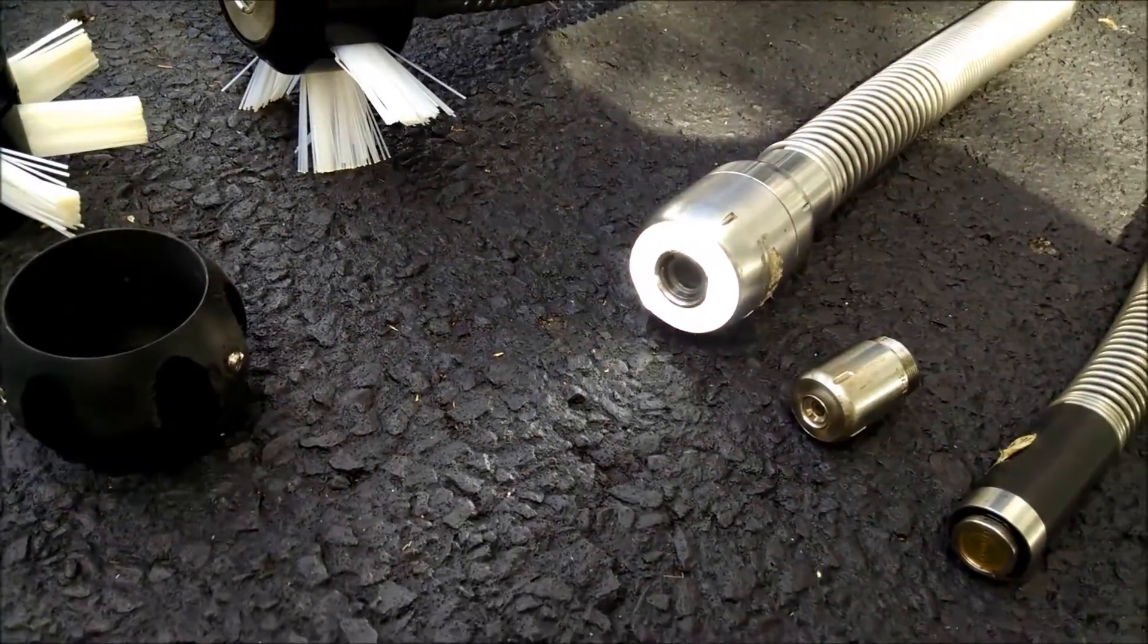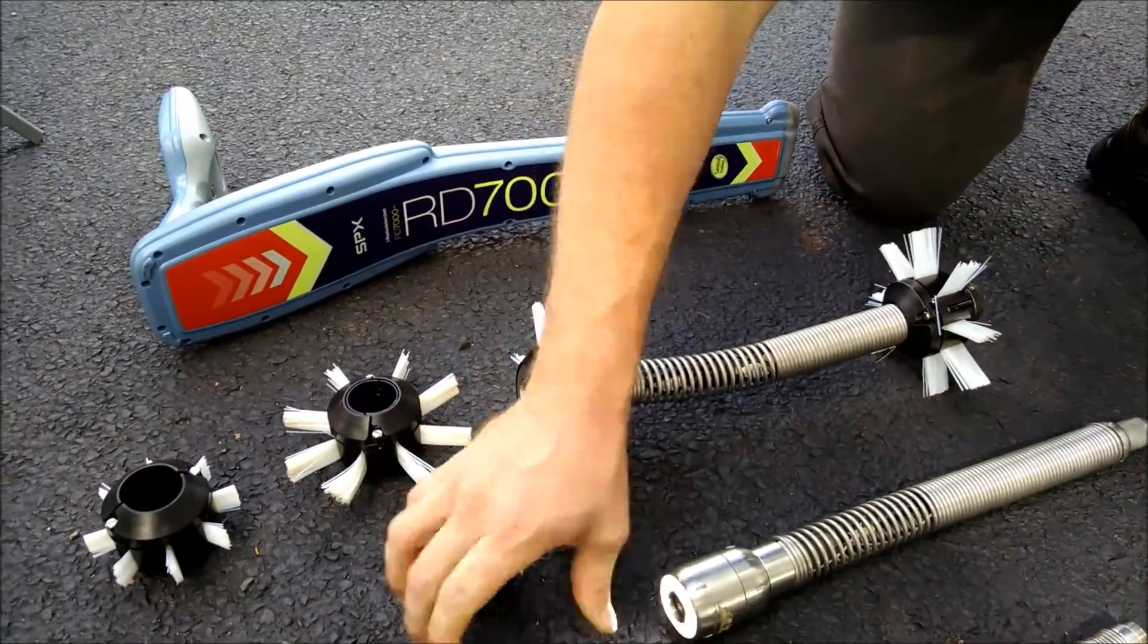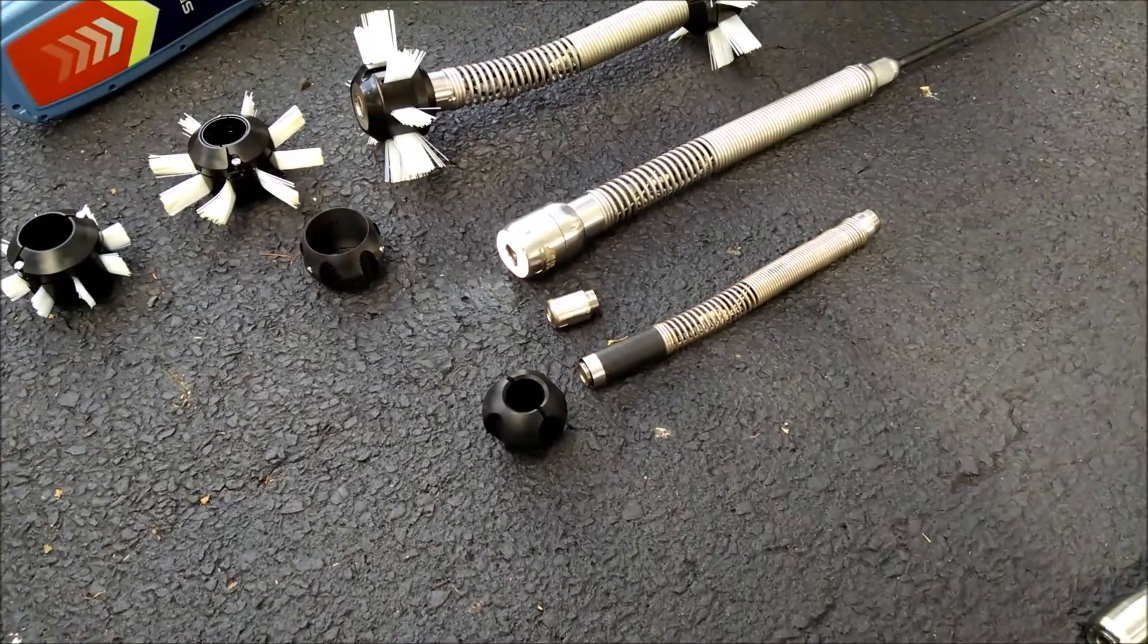Both camera heads come standard with skid balls to help protect the camera head and keep it lifted off of the bottom of the pipe.